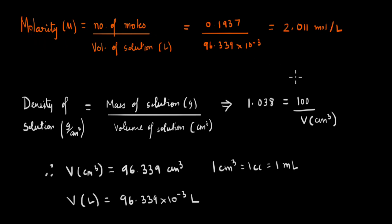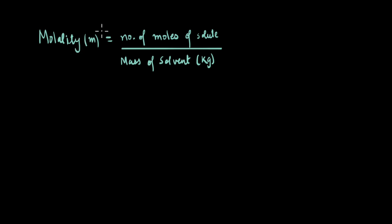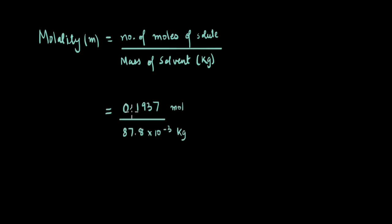Next, let's calculate the molality. Molality is defined as the number of moles of solute divided by the mass of the solvent in kilograms. We already calculated the moles of solute as 0.1937, and the mass of the solvent is 87.8 grams, so dividing by 10⁻³ to convert to kg, the molality comes out to be 2.206 moles per kilogram.